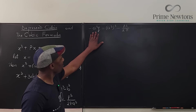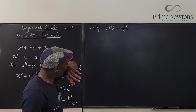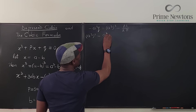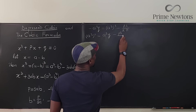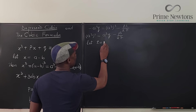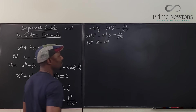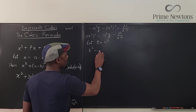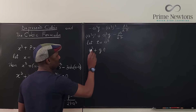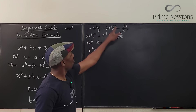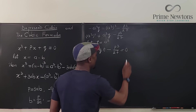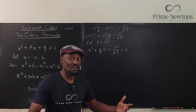Nothing else has changed. I can rewrite this as: a cubed squared minus q times a cubed minus p cubed over 27 equals 0. This is a quadratic in terms of a cubed. So let t equal a cubed. This becomes t squared minus qt minus p cubed over 27 equals 0. I can use the quadratic formula: t equals minus b, which is minus q, plus or minus the square root of q squared minus 4ac, where 4ac is 4 times 1 times (minus p cubed over 27), giving plus 4p cubed over 27, all over 2.